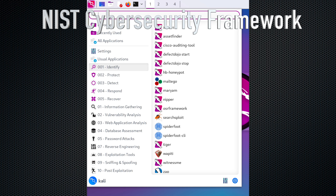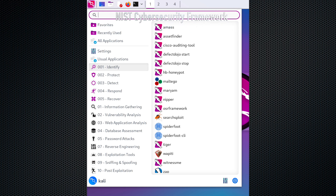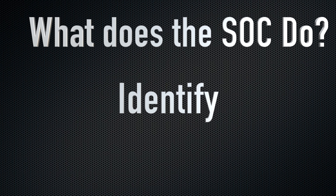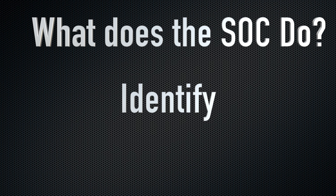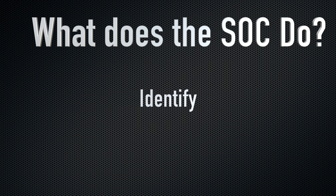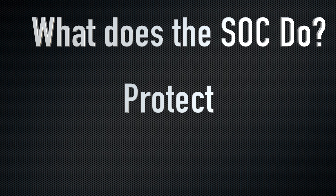This is what the entire security operations center does. Identify is the first part, involving identifying critical assets and systems that require protection. The second part is protect, which is implementing safeguards to protect against potential threats.